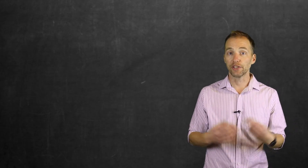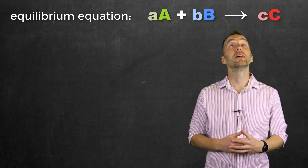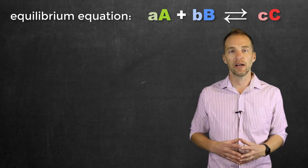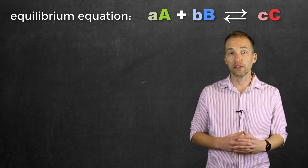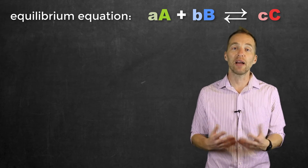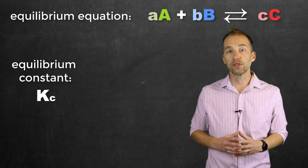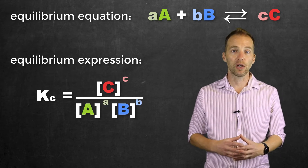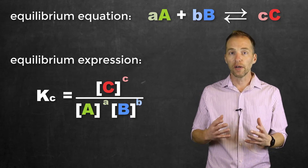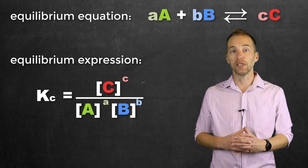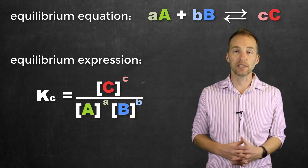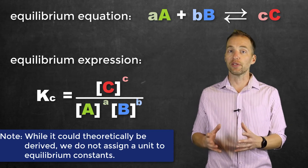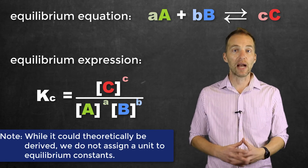Now that we understand that chemical reactions can proceed in both directions, when we analyze an equilibrium system, we remove the unidirectional arrow and replace it with a double arrow to indicate it's an equilibrium system. Since the rate of the forward reaction equals the rate of the reverse, we can derive a value called the equilibrium constant. We derive this by taking the concentration of the products raised to the appropriate exponent from the coefficients of the balanced chemical equation, over the concentration of the reactants raised to their respective coefficients. If we know the concentrations at equilibrium, we can use those to establish the equilibrium constant K for that reaction under those conditions.